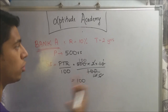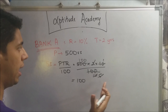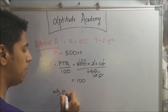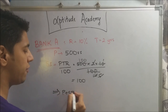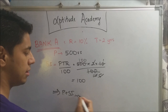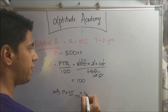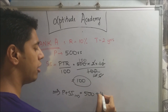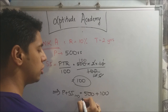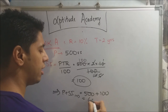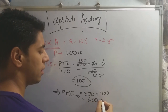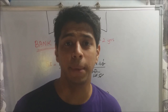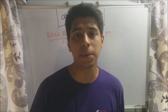At the end of two years, when you go to Bank A, you will get your principal amount plus your simple interest for two years. That is 500 plus 100 rupees, so you will get 600 rupees.